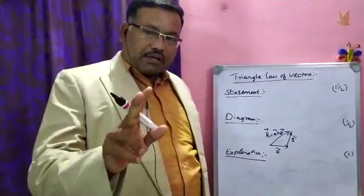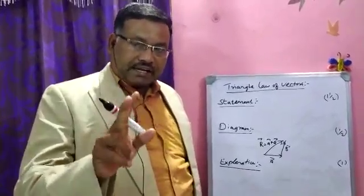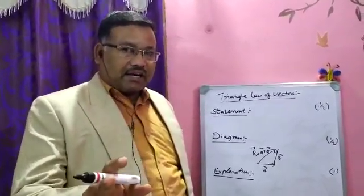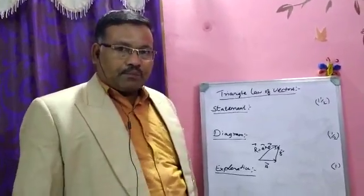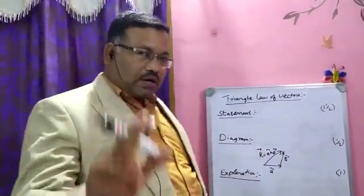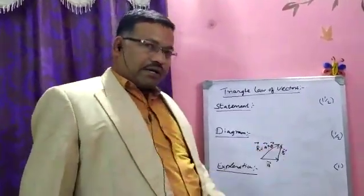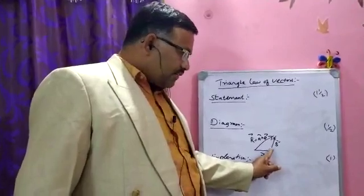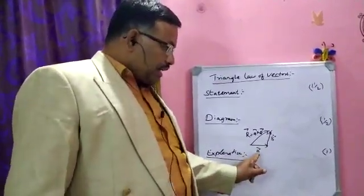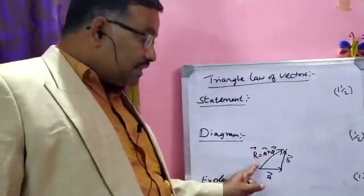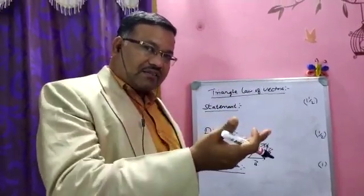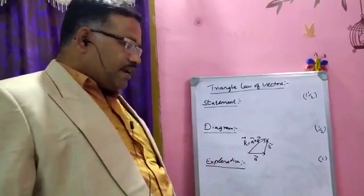Once again: if two vectors are represented in magnitude and direction by the sides of a triangle taken in order, then the resultant is represented in magnitude and direction by the third side of the triangle taken in reverse order. A and B are two vectors represented by two sides of a triangle. The net value of A and B is represented by the third side of the triangle taken in reverse order — A and B are in one order and the resultant is in the reverse order.